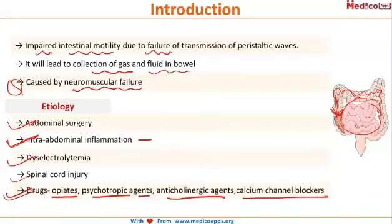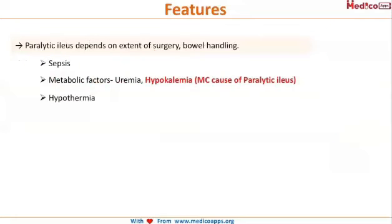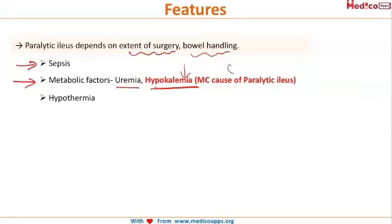These drugs and spinal cord injury as etiological factors have been asked in the exam. Paralytic ileus also depends on the extent of surgery and how the bowel is handled during surgery, influenced by conditions like sepsis and metabolic factors including uremia or hypokalemia. Importantly, hypokalemia is the most common cause of paralytic ileus — this has also been an exam question. Hypothermia can also lead to paralytic ileus.